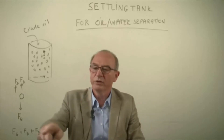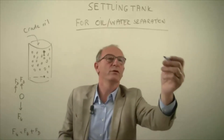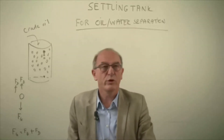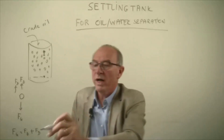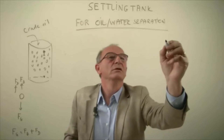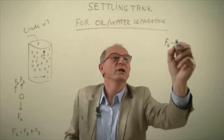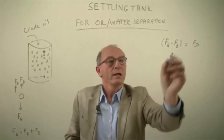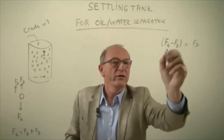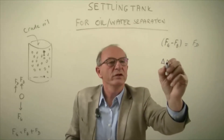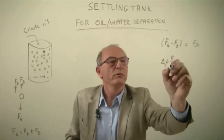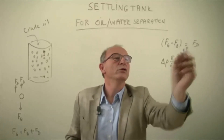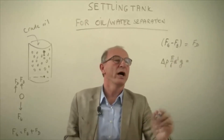You can solve this problem by substituting all these values. The gravity force is the mass multiplied by the gravity constant, and similarly for the buoyancy force. If you combine these two you get a balance: Fg minus Fb equals the drag force. Combining these and substituting the mass and gravity, we get the difference in density multiplied by the volume multiplied by the gravity constant equals the drag force. We assume that we may apply Stokes law here.